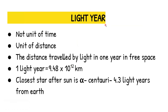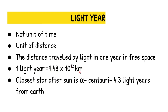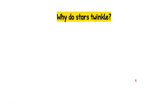Next is the light year. Many people are mistaken by the name — it sounds like a unit of time, but a light year is actually a unit of distance. It is defined as the distance traveled by light in one year in vacuum. One light year is equivalent to 9.48 × 10¹² kilometers. Apart from the Sun, the closest star to Earth is Alpha Centauri, which is 4.3 light years away.